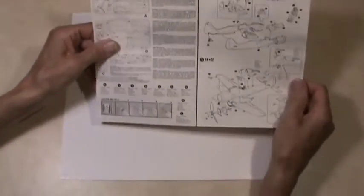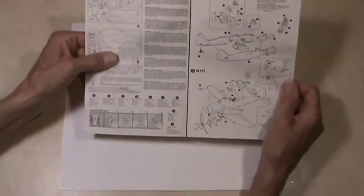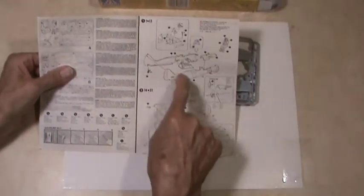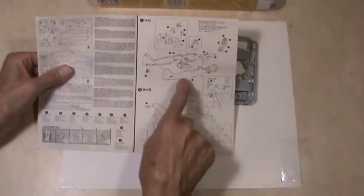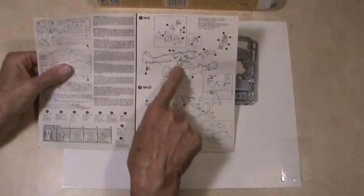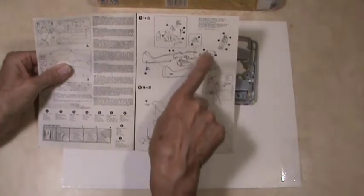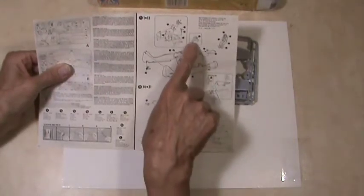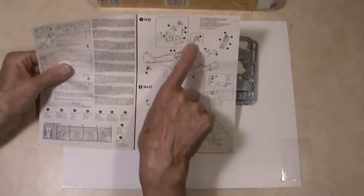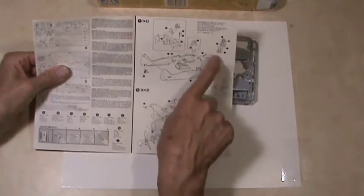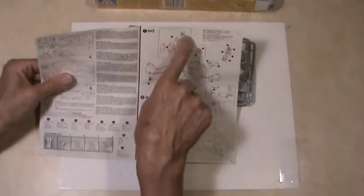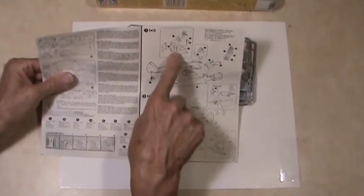So the first thing we'll see is the sprues and the numbers for the various parts on the sprues. And then you have your instructions on how to build models, just in case this is your first model you've ever built. And then we get into the assembly instructions here, and you have your fuselage halves and the cockpit details.